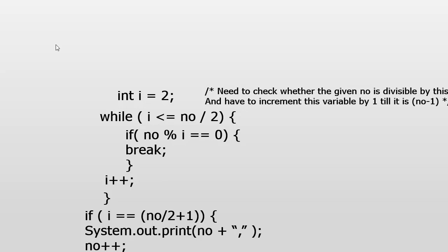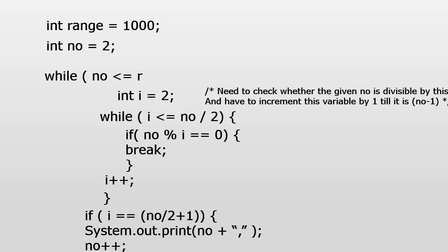We need to print the prime numbers from 2 to 1000. We take a variable for the range initialized to 1000 — you can change this to 10,000 or any value depending on the requirement. The range defines till what number you are printing primes. We start with number = 2 and use an outer while loop: while number is less than or equal to range, iterating from 2 to 1000. For each number we check whether it is prime, and if so, we print it.